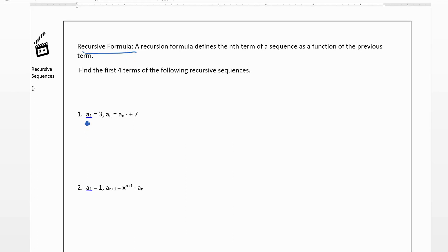So this is telling us it'll give you your first term. So this is saying that a₁ is 3. Then it's saying for any other term, you're going to take the previous term and add 7 to it.